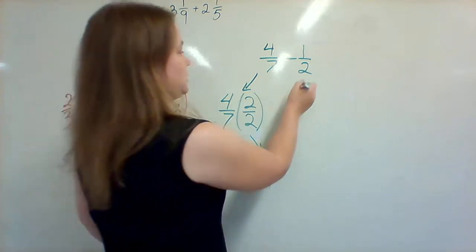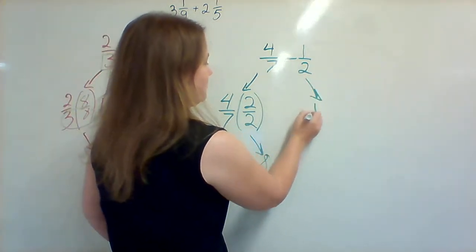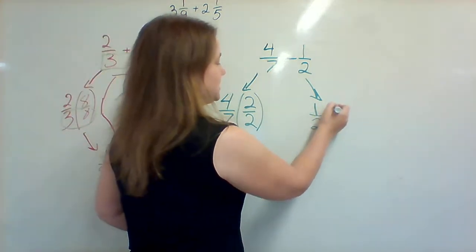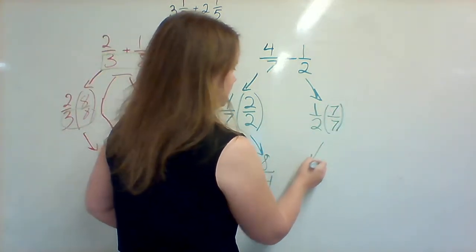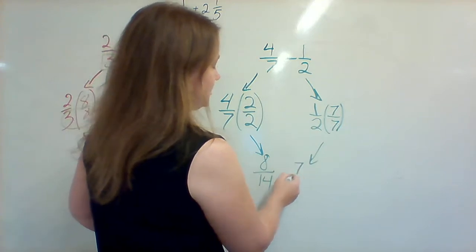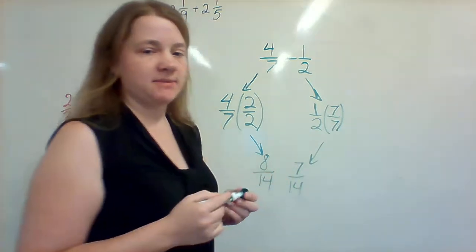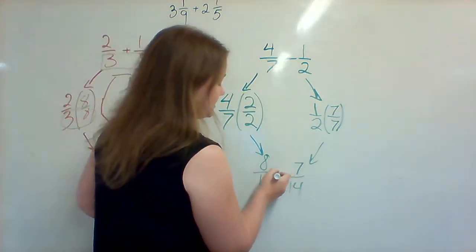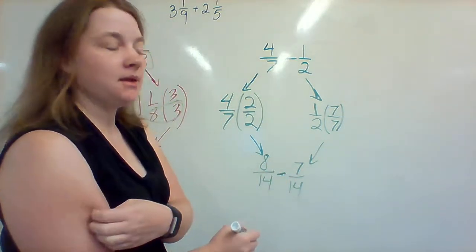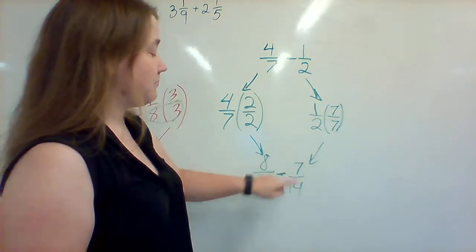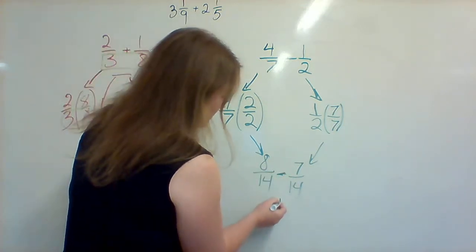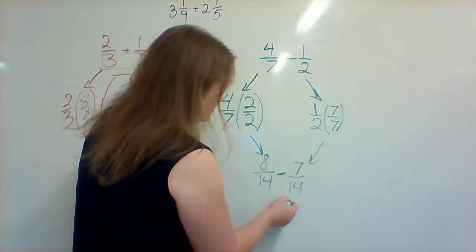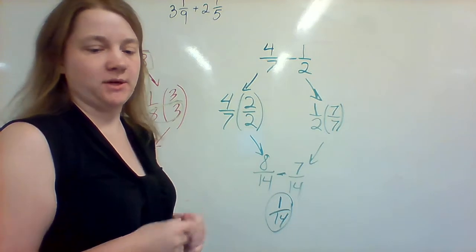I'm going to move over to the other fraction, which is 1 half. Take that out. Multiply using the other denominator, that's 7 over 7. 7 times 1 is 7 and 2 times 7 is 14. This was a subtraction problem, so I have to make sure that I'm subtracting down here. And then I have 8 minus 7, which is 1, and 14 on the bottom stays 14. And then I have my final answer for this question.